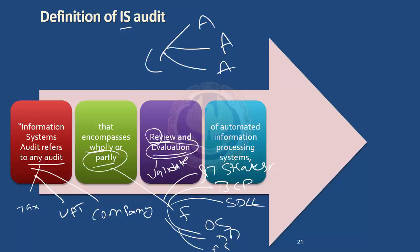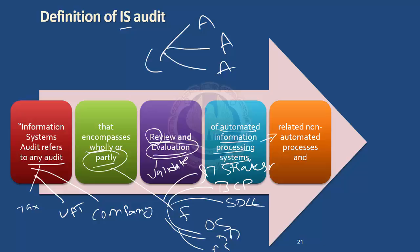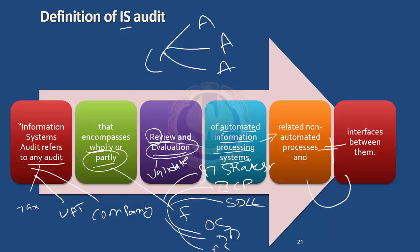The scope of IS audit could cover automated information processing systems, or also the related non-automated processes. For example, in a supermarket you have a procurement system that is completely automated, but there is a manual interface where somebody barcodes pricing on items — that's the related non-automated process. When doing an IS audit, you also look at the interfaces between automated and non-automated processes, because you are looking at systems in totality to see whether they work in unison to provide the facility to process information as per organizational requirements.